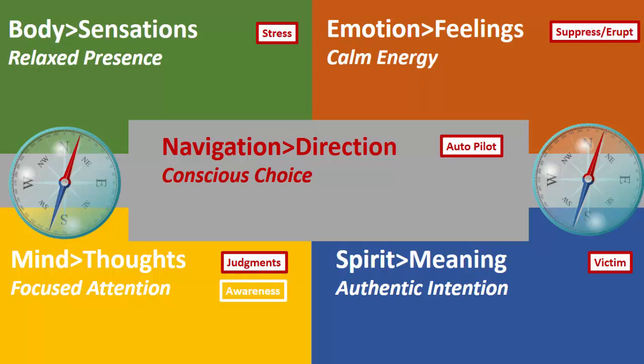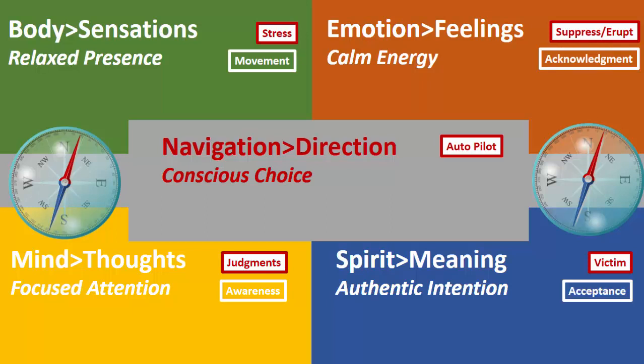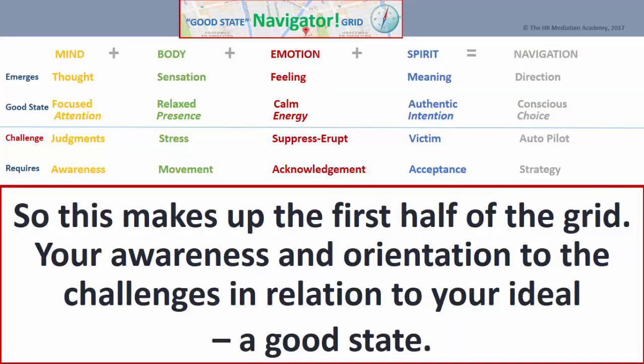Fortunately, there are remedies to these challenges. When we subject our judgments to greater awareness — whether through self-reflection or feedback — we are able to use our attention wisely. When we allow our body to move, whether physically or mentally, we unlock stress. When we acknowledge our emotional energy, we are able to find our inner calm. When we accept our life and in it find meaning, we are no longer victims of circumstance, but life navigators. And when we implement a strategy, we choose a direction that consciously leads to our highest values. This makes up the first half of the grid: your awareness and orientation to the challenges in relation to your ideal — a good state.